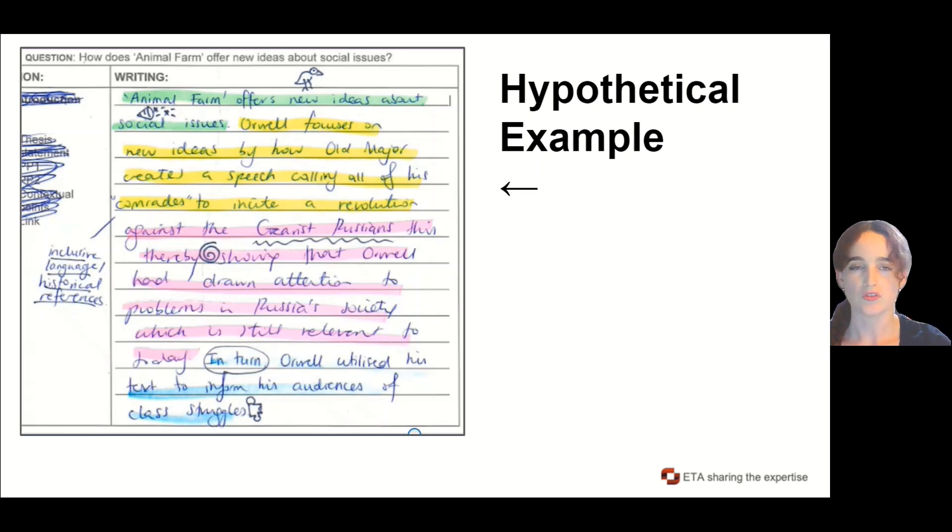Why is it a parrot? Because it's simply just restating the question as an answer. Why is there a confetti symbol there? Because it's just restating keywords from the question in the sentence—it's not engaging with them properly.